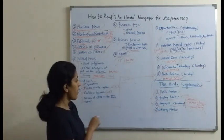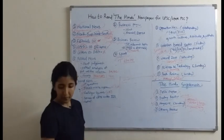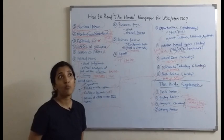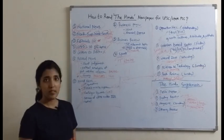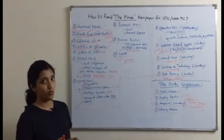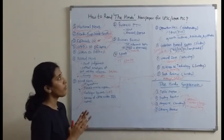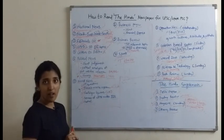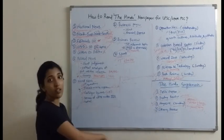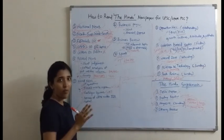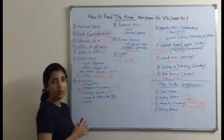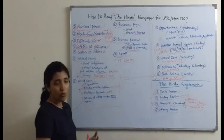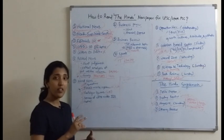So overall, this is the analysis of what the Hindu covers and which topics are important to read. Students often ask how much time reading the Hindu should take. It depends on how long you have been reading it. If you have been reading for one and a half years, you are accustomed to the language and can cover it in 35 to 40 minutes. But if you are a fresher, you will require around one and a half hours. The key point is that you have to read the Hindu and make notes so that you can retrieve and revise before the examination.